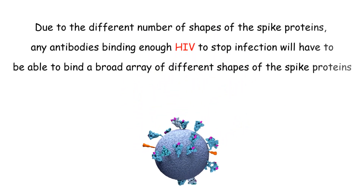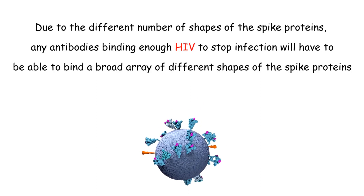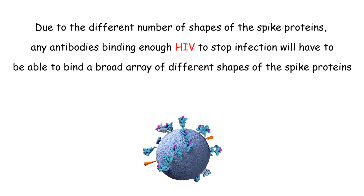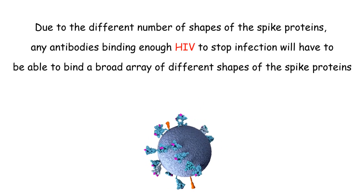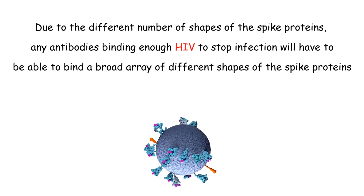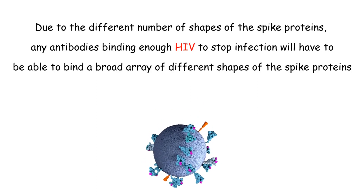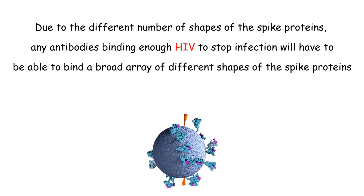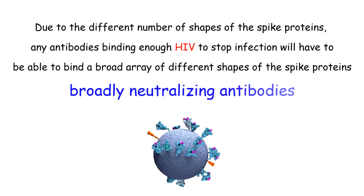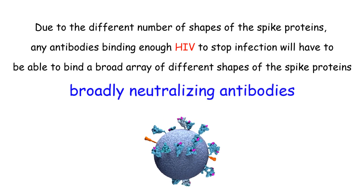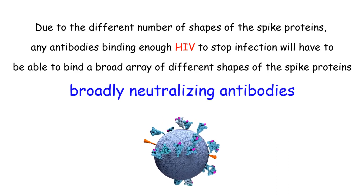Due to the different number of shapes of the spike proteins, any antibodies binding enough HIV to stop infection will have to bind a broad array of different spike protein shapes. This is why the type of antibodies needed are often referred to as broadly neutralizing antibodies — antibodies that are broad in the types of spike proteins they can bind.